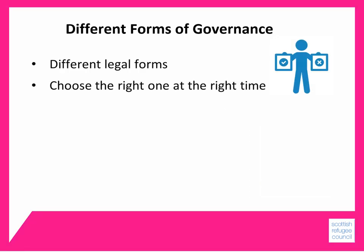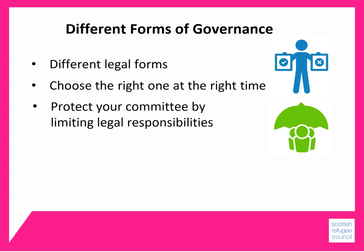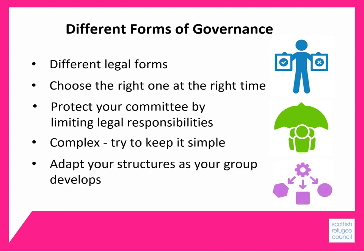Different types of governance will take different legal forms, and what matters is that you choose the right one at the right time. When your organisation begins to deliver services, employ staff or buy or lease property, there is the potential for you to make legal mistakes. Many of the governance options will provide protection for committee members from individual action being taken against you for these mistakes. It's important that you protect the committee by limiting legal liabilities using the governance options. You should try to keep it simple for as long as you can and adapt your structures as your group develops, rather than develop the most complex one for all eventualities at an early stage.